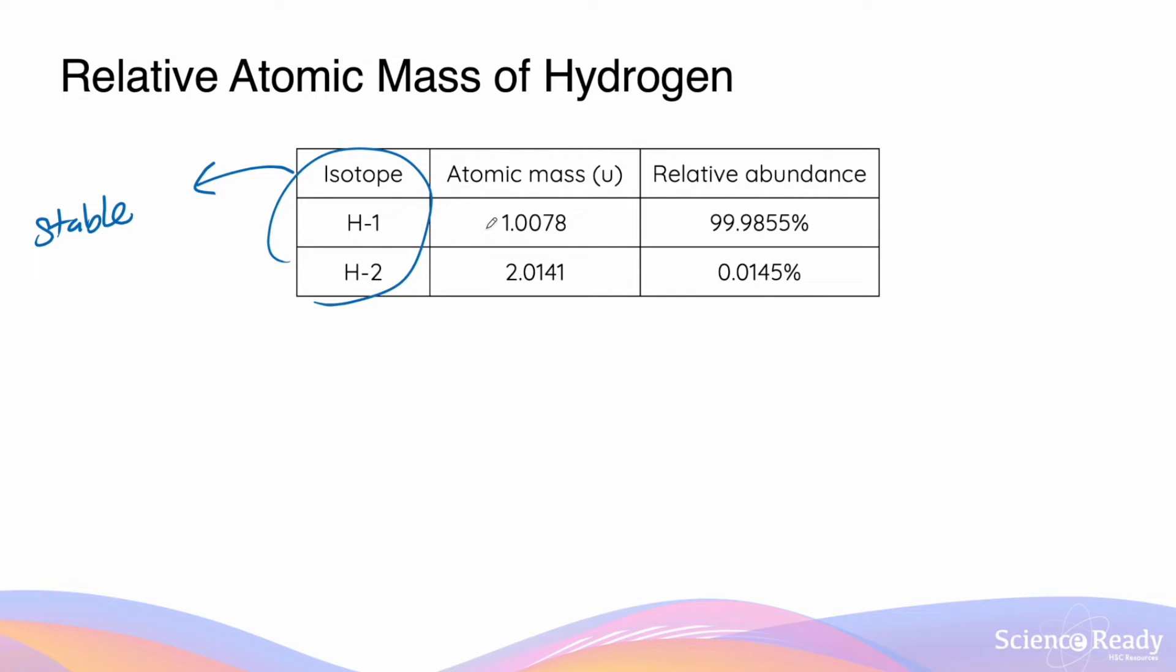We've got hydrogen-1, which has atomic mass of 1.0078, and H-2, which has an atomic mass of 2.0141 atomic mass units. And these are the relative abundances. So the relative mass will be equal to the atomic mass of each isotope multiplied by the corresponding abundance, and we add them together.